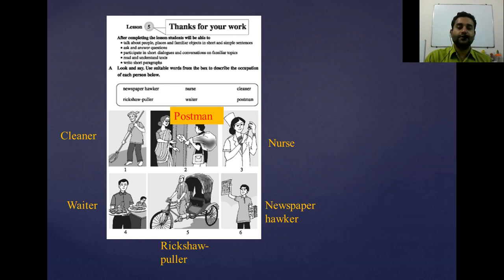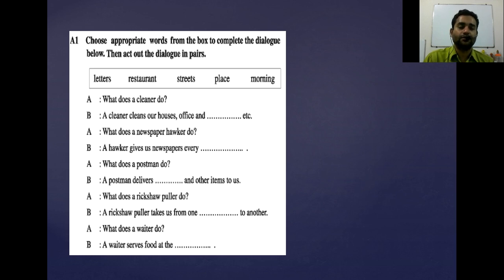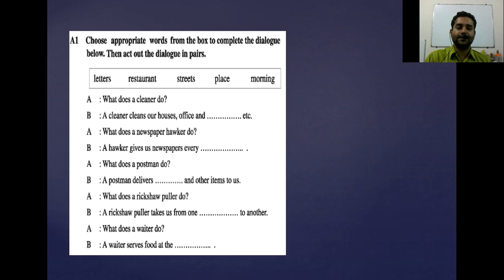After this page, if we move to the next page, we will find this activity: choose appropriate words from the box to complete the dialogue below, then act out the dialogue in pairs. As we are seeing this lecture from our home, there is no way to make a dialogue in pairs. So we will read out and match the words from the box and put them into the right gaps. I am giving you one minute — pause the video and write down the answer if you can. I will show you the answer after one minute.